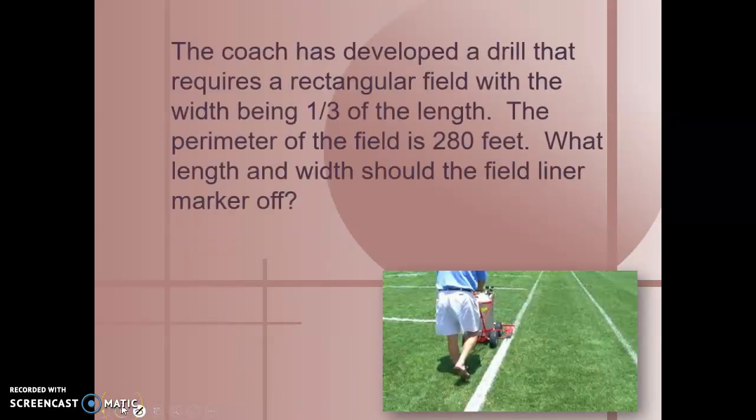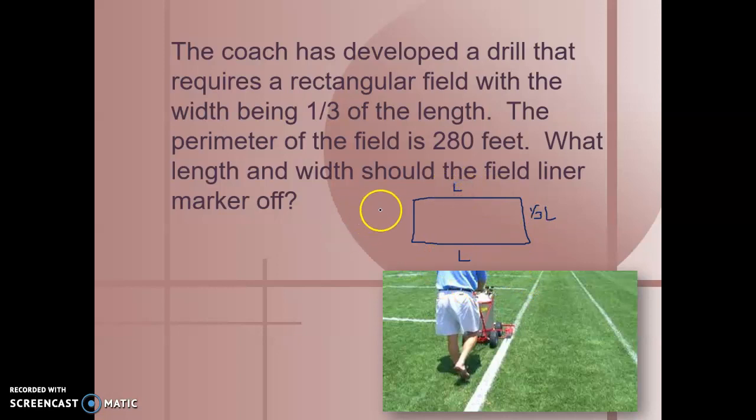Now, let's try taking some word problems and turning those into equations. The coach has developed a drill that requires a rectangular field with the width being one-third of the length. The perimeter of the field is 280 feet. What length and width should the field line mark off? Well, whenever we're dealing with word problems, I like to draw pictures first. So if this is my length, my width is one-third of the length. Of just means multiplied, so one-third L.